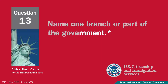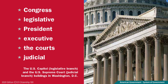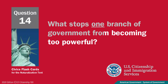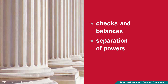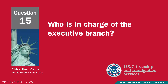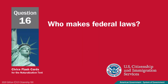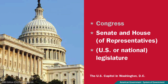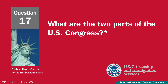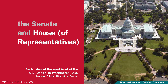Name one branch or part of the government. Congress. What stops one branch of government from becoming too powerful? Separation of powers. Who is in charge of the executive branch? The president. Who makes federal laws? Congress. What are the two parts of the U.S. Congress? The Senate and House of Representatives.